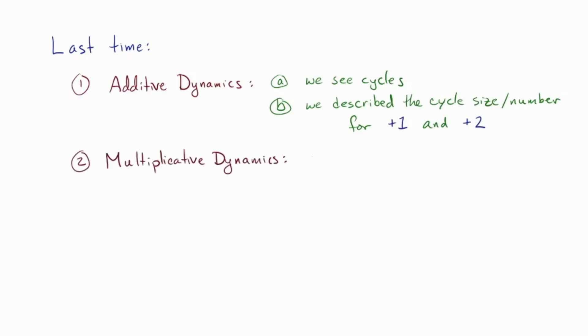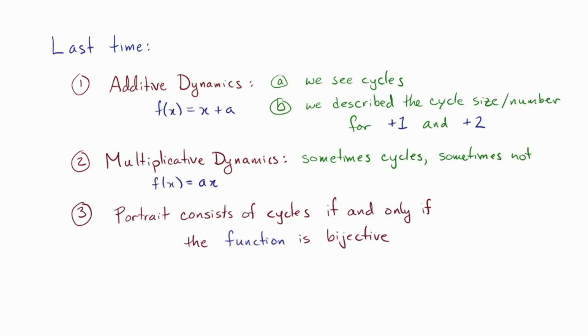In the last video, we saw that for additive dynamics we often got cycles, and we described the cycle sizes for the dynamics of plus 1 and plus 2. We saw that for multiplicative dynamics, sometimes the portraits were made of cycles and sometimes they weren't. And we proved that a dynamical portrait is made of cycles if and only if the associated function is bijective. Here's what we mean by function: it's the function that adds a in the additive dynamics or multiplies by a in the multiplicative dynamics. This is the function that we're drawing a picture of.